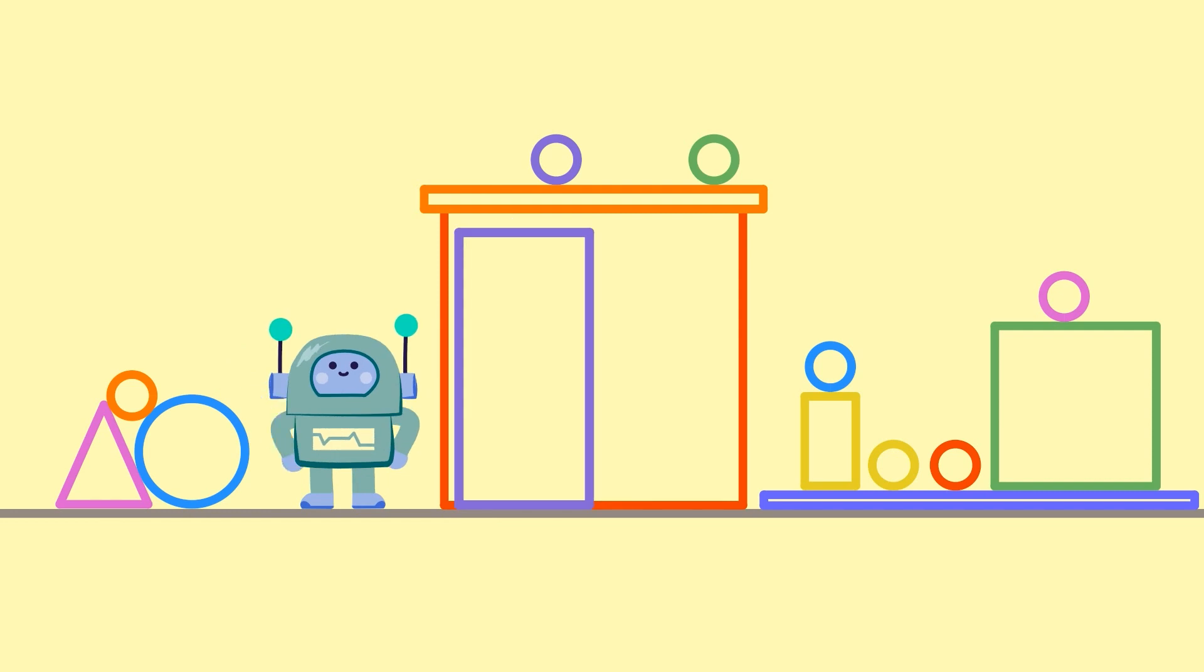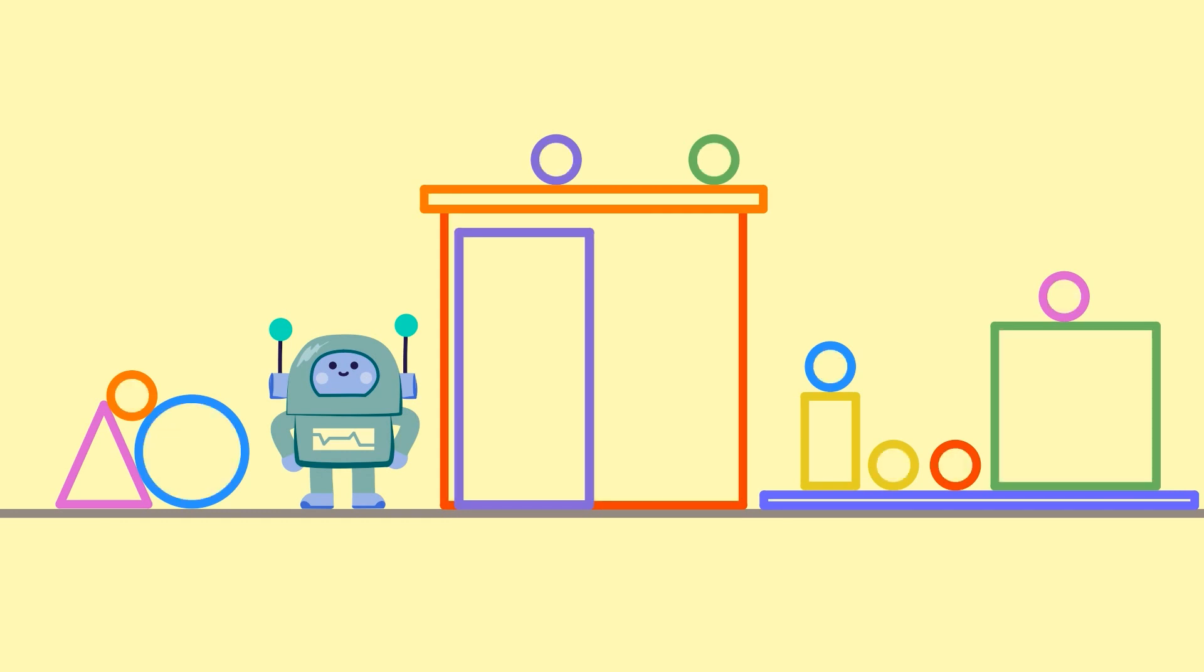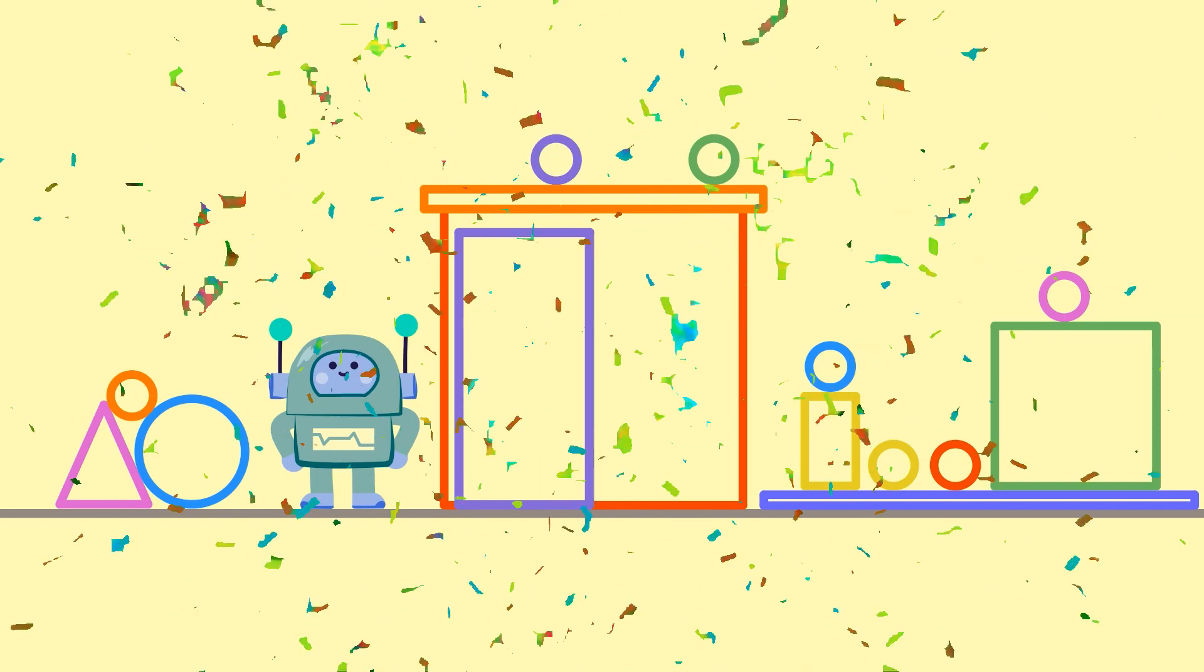Now, can anyone tell me what shapes you can see? Triangle. Rectangles. Squares. Circles. Yay!